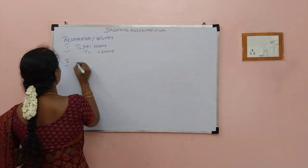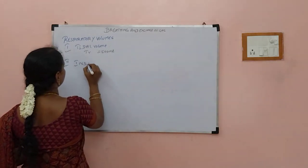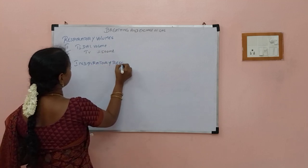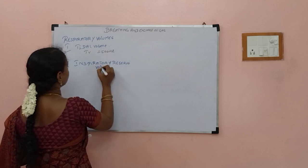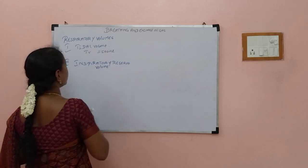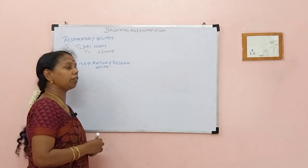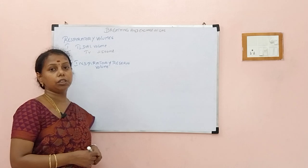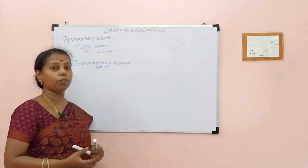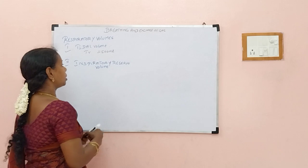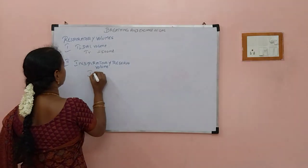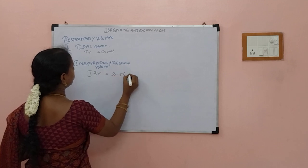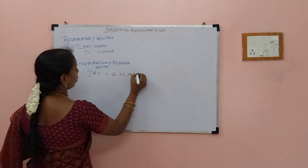The next one is inspiratory reserve volume. You might have experienced this — when you do yoga they will say deep inhalation, inhale, inhale. So we will be inhaling an extra volume of air. That extra volume of air we call IRV, which is equivalent to 2.5 litres to 3 litres.